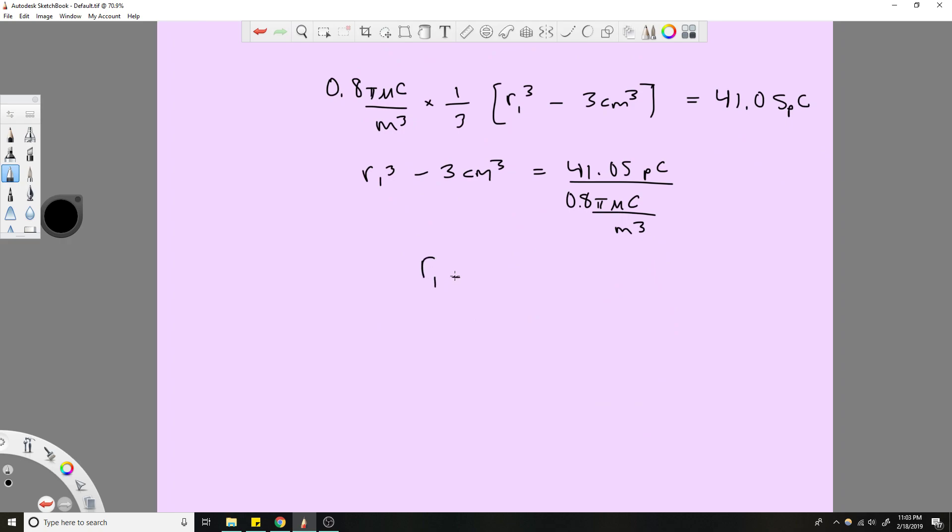You'd add over this 3 centimeters and cube root the whole thing because you're trying to get rid of this to the power of 3. So cube root of 41.05 picocoulombs over 0.8π microcoulombs per meter cubed, added to 3 centimeters cubed. Notice again it's always good to look at units. If you have this root 3 and you have meters cubed, you're going to end up with meters, which is what you're looking for.